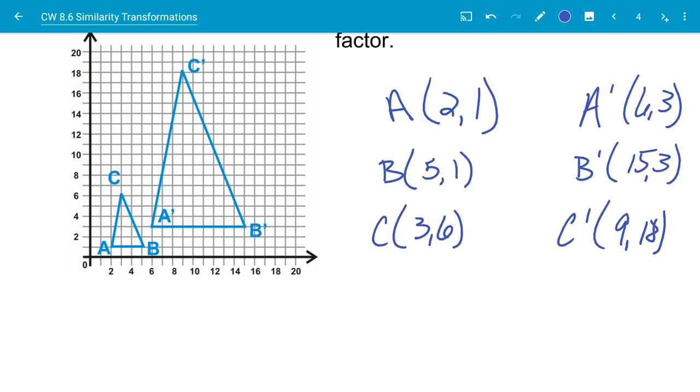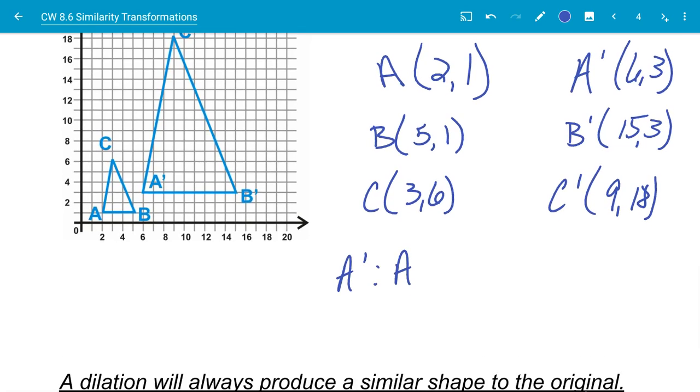When we look at this, we have to find the scale factor of the prime, our dilation, to our original to get the scale factor. Because remember, if our scale factor is larger than 1, then it has expanded. And that's what is happening here is our dilation is getting larger. It's expanding.